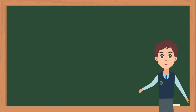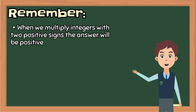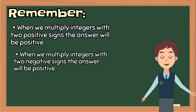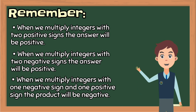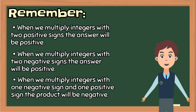Remember: when we multiply integers with two positive signs, the product will be positive. When we multiply integers with two negative signs, the product will be positive. When we multiply integers with one negative sign and one positive sign, the product will be negative.